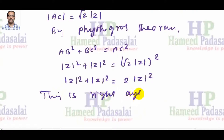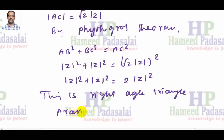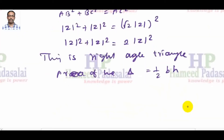This is a right-angle triangle. For the area of a right-angle triangle we use the formula: Area = ½ × base × height.